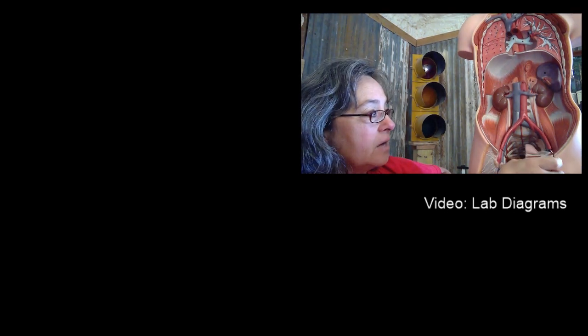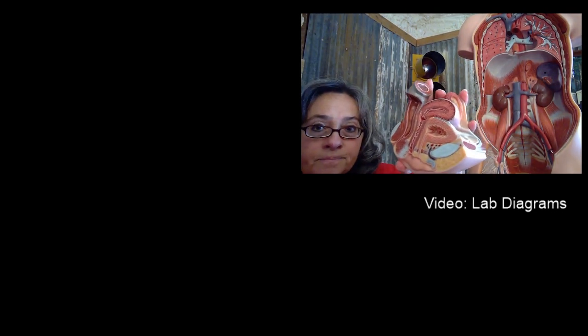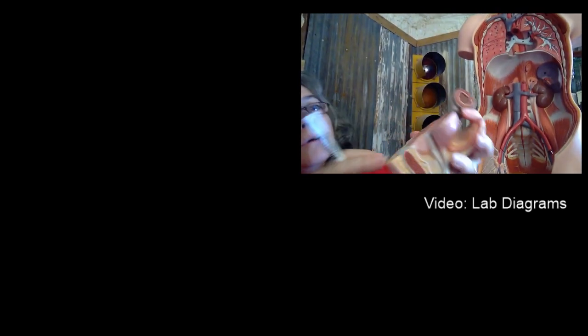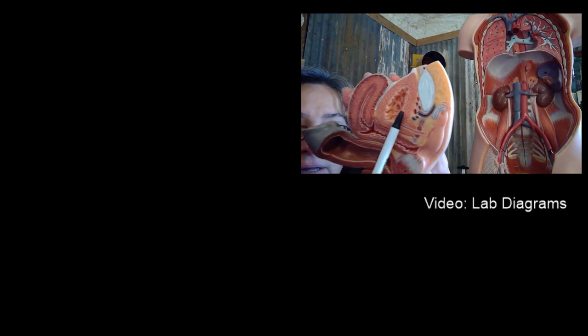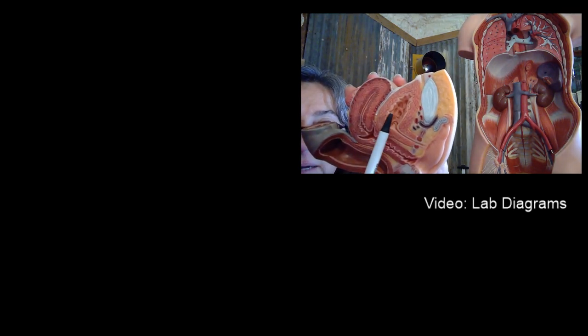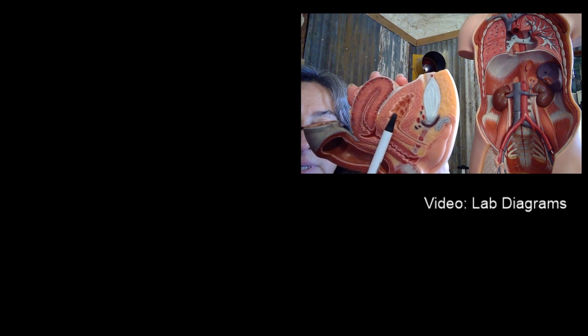From the kidney you have this tube right here called the ureter that brings urine from the kidney to the bladder. This is a female model, so I'm going to take out part of this and show you up close. Here's the bladder — you can see it has the stretching ability by looking at these ridges, similar to what we saw in the stomach. And this tube right here leads from the bladder to the outside of the body — that's called the urethra.